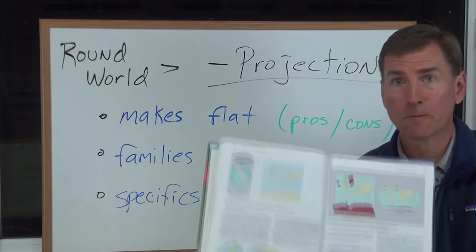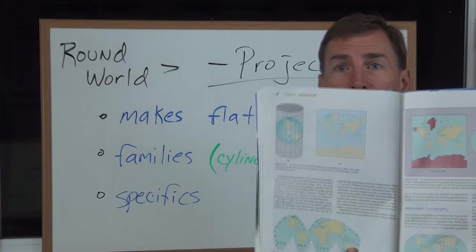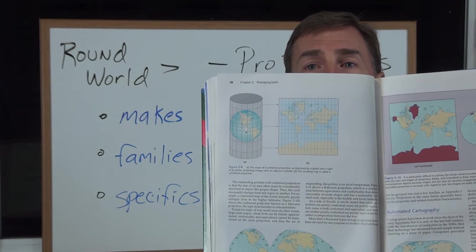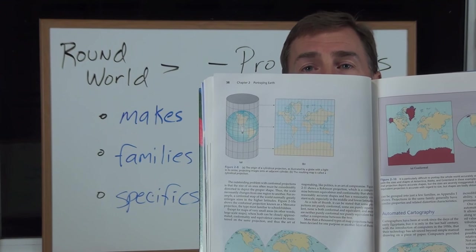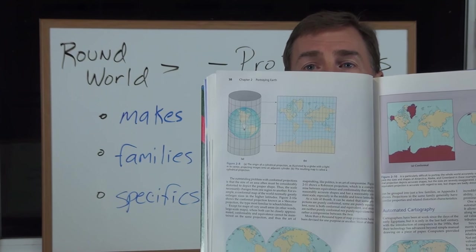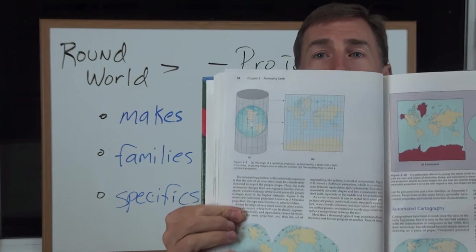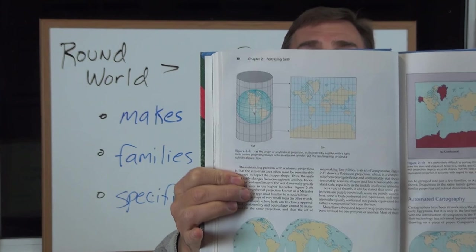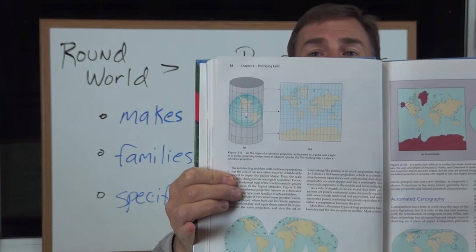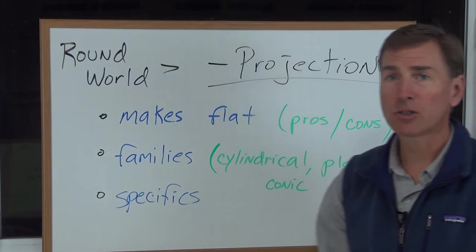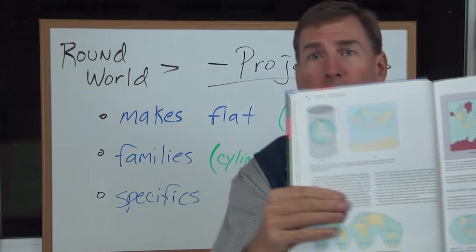Alright, so let's take a look at this textbook that I use. So you could take, for example, a cylinder, put a light bulb in the middle, project that image onto the cylinder, and then unroll it and you get a flat map. Now, the pros are that you have a nice square map there. This is the Mercator projection, and it's a cylindrical family.